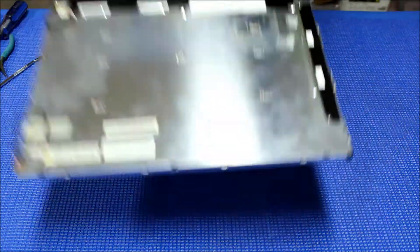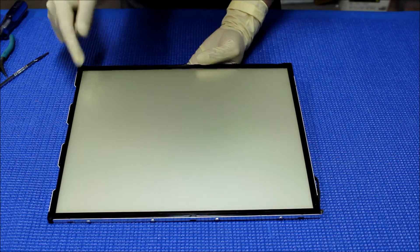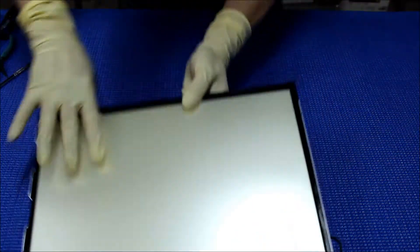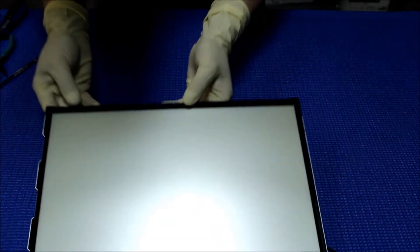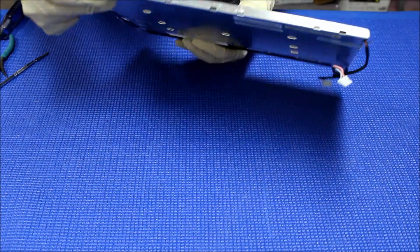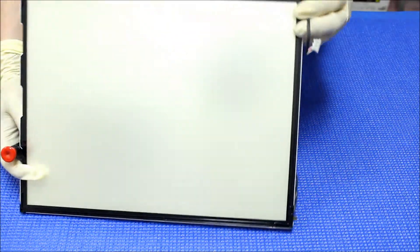And if you see some dirt, you can clean it now or later. We can do it later. Now we set it aside. This is the backlight unit. Next thing, we need to remove this plastic film and then remove the diffusion sheet. Then we can access the lamp assembly. So here we go.